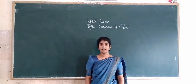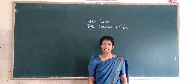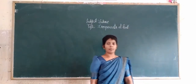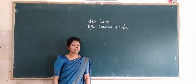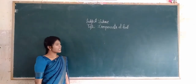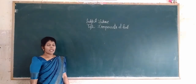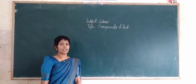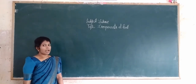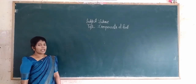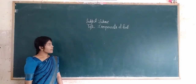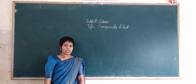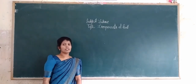Hello everyone. In our last class we learned the topic components of food. We know which are the components: carbohydrates, proteins, vitamins, minerals, water, and dietary fibers. These components are also called as nutrients.